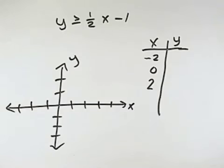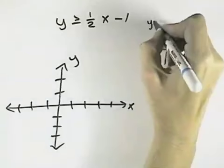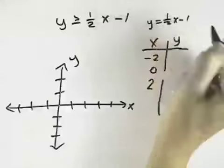We want to graph this inequality in a rectangular coordinate system. Well, that means first we graph the equality, y equals 1/2x - 1.